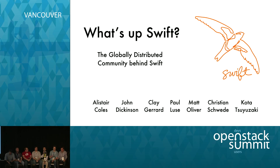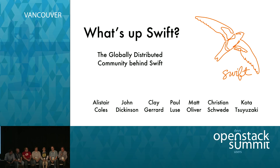My name is Kota Tsuzaki. I'm working for NTT in Japan, working on Swift for about three years, but not yet on the core team. My name is Christian Schroeder. I'm working for Red Hat as a principal software engineer, based in Hamburg, Germany, working on Swift for about two and a half years, and been a core reviewer for one year. I'm Alistair Coles. I'm with HP on their Helion engineering team, based in the UK. I've been working on Swift for around two years, and for the last year I've been a core reviewer.